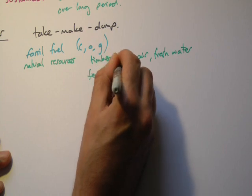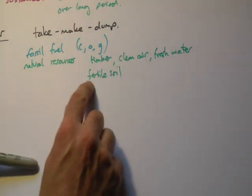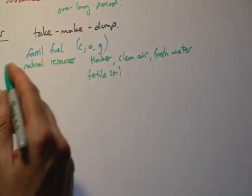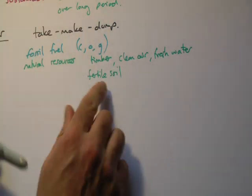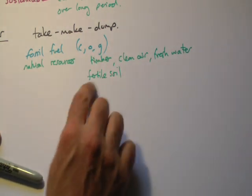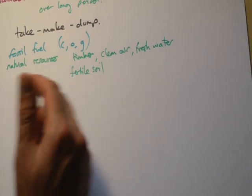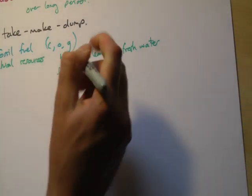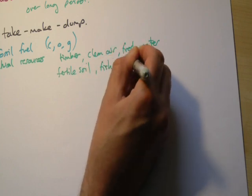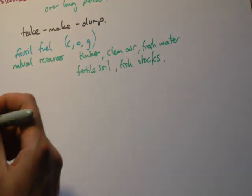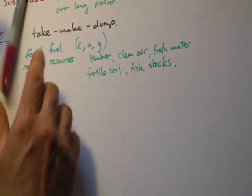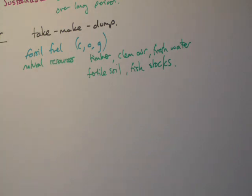Fertile soil — fertile meaning you can actually grow something in it — needs dead organic matter like dead leaves. If there's nothing in the soil, it's basically just rock and you can't grow anything. It's getting washed away in many places through deforestation. And fish stocks — a famous example in the UK is cod. There was so much fishing of cod that levels really dropped off, although cod is starting to replenish itself now.